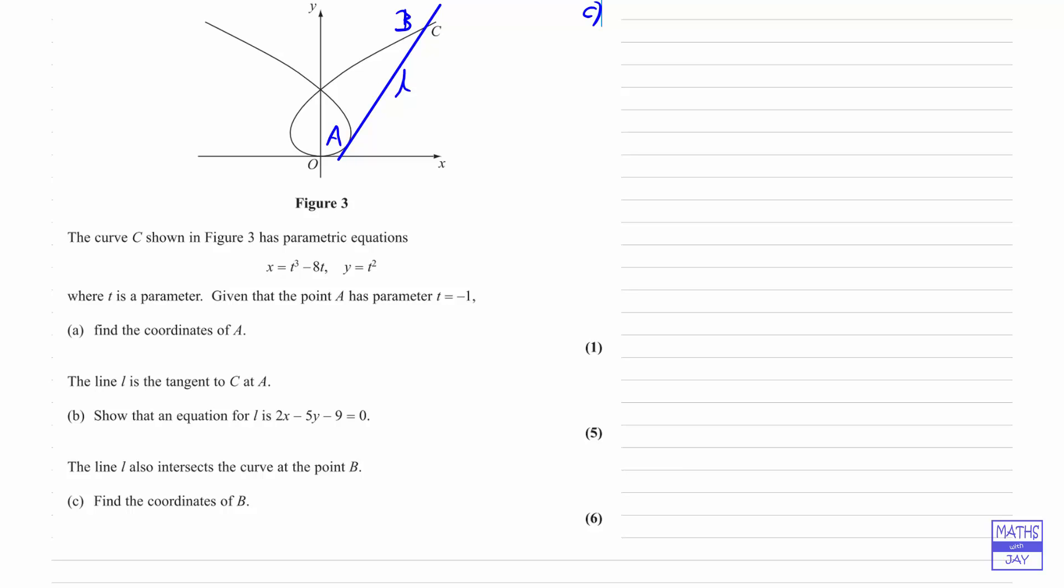Remember that we've been given parametric equations for curve C, so we know X and Y on the curve C in terms of T. The point B is also on curve C, so the parametric equations are going to hold there. In fact, the point B is on the curve and it's on the line, so what we can do is use the equation of the line from part B and put the values of X and Y in terms of T in there.